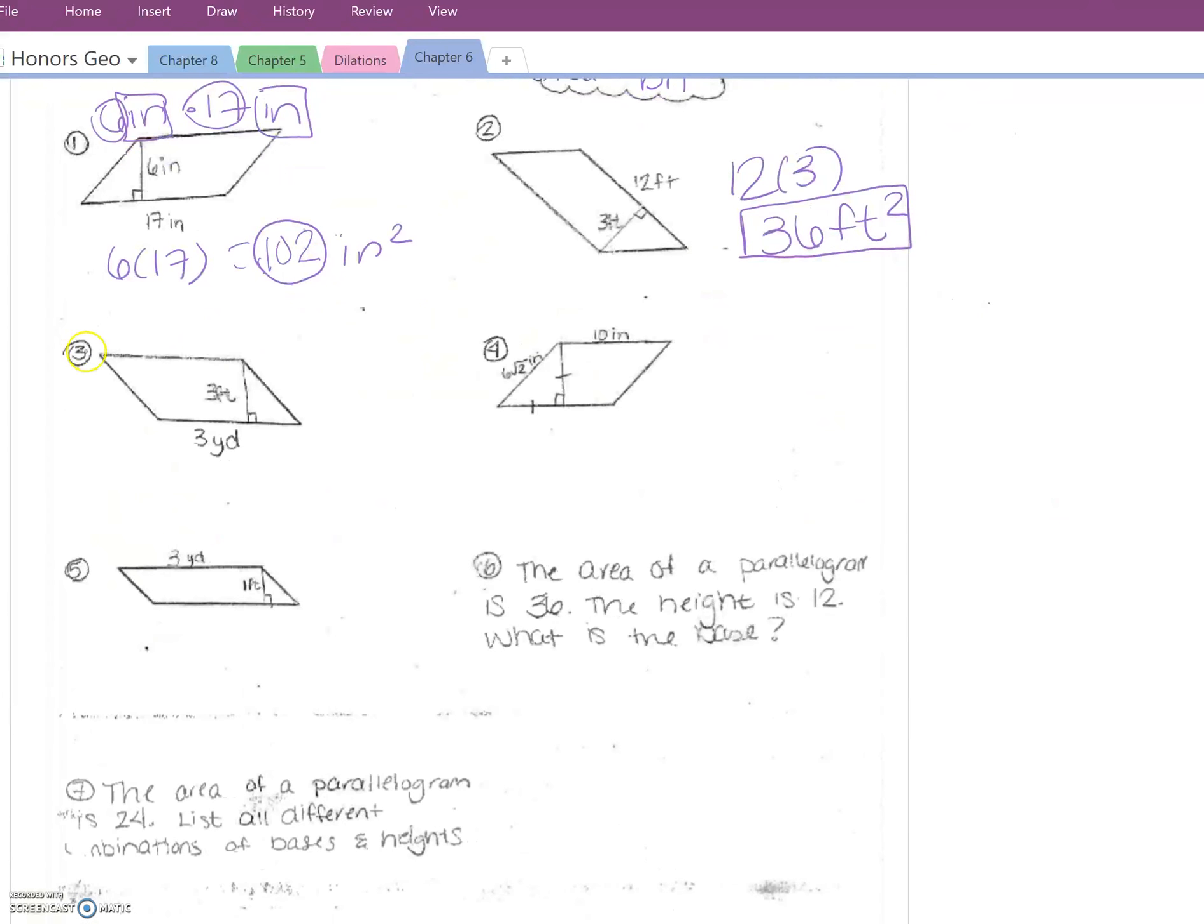Number three, be careful with your units. This is 3 yards, this is 3 feet. It doesn't matter how you do this. If you want to do it all in feet that's fine, if you want to do it all in yards that's fine. If we wanted to, you could change 3 yards into 9 feet, and so 9 times 3 would be 27 feet squared.